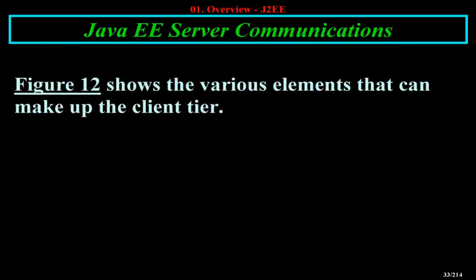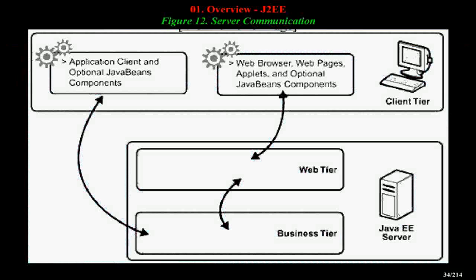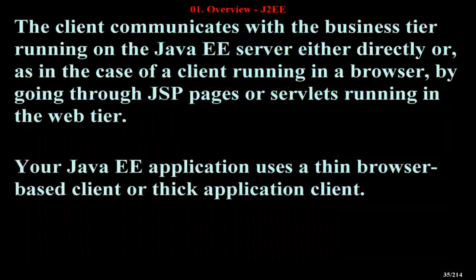Java EE Server Communications. Figure 12 shows the various elements that can make up the client tier. The client communicates with the business tier running on the Java EE server either directly or, as in the case of a client running in a browser, by going through JSP pages or servlets running in the web tier.